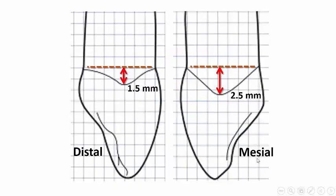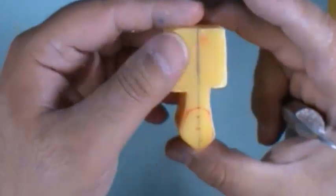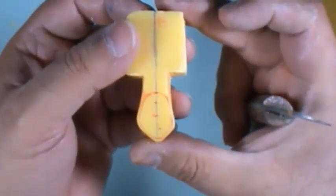The depth of the mesial cervical line is 2.5 mm, while the depth of the distal cervical line is 1.5 mm. Now it's time to carve.